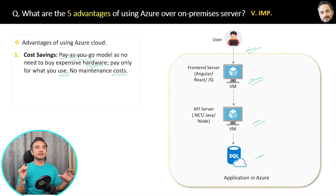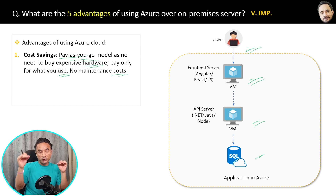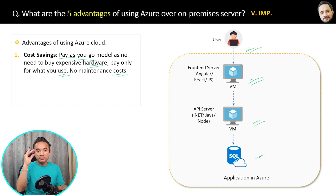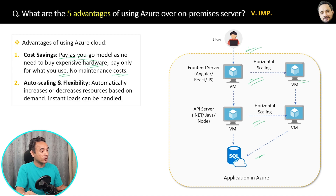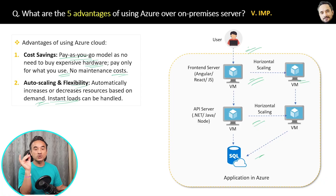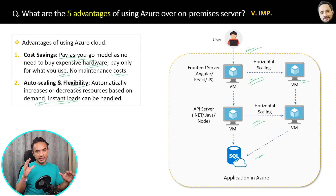The second advantage: suppose your company hosts an e-commerce application and users come mostly on weekends. With on-premises, you'd have to buy extra physical servers to handle that load. But with Azure cloud, virtual machines are automatically added on weekends and automatically removed on weekdays. This is called auto-scaling and flexibility — it automatically increases or decreases resources based on demand so instant load spikes can be handled.